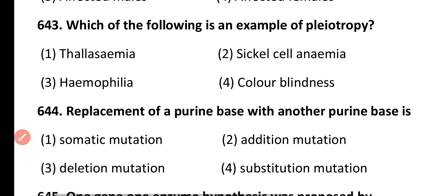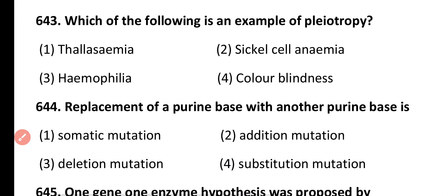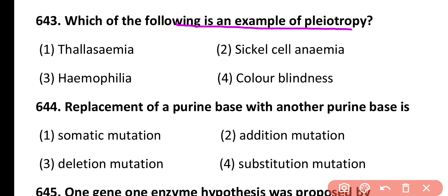Question 643. Which of the following is an example of pleiotropy? Thalassemia, sickle cell anemia, hemophilia, color blindness. Correct answer is option 2. Among the given options, sickle cell anemia is an example of pleiotropy.